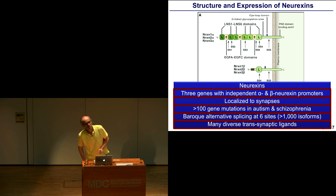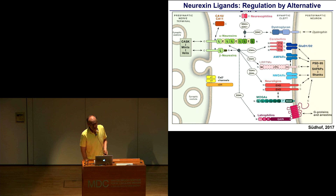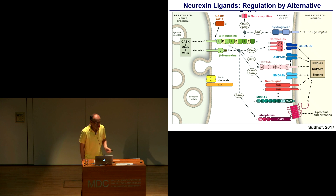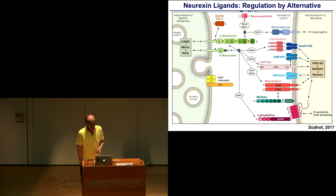There have been hundreds of gene mutations, especially in neurexin 1, that have been associated with autism, schizophrenia, and Tourette's syndrome, suggesting that heterozygous dysfunction of neurexin 1 predisposes to neuropsychiatric disease. Neurexins are subject to extensive alternative splicing that has very interesting functional importance, which I'm not going to discuss today. Finally, not surprisingly, there are multiple diverse trans-synaptic ligands — and this is where neuroligins come in.